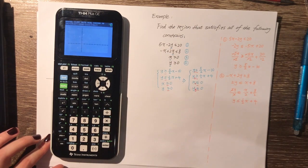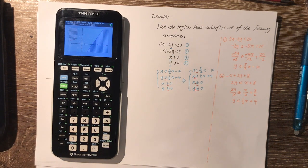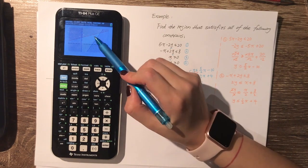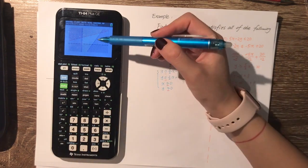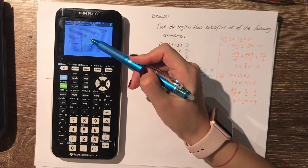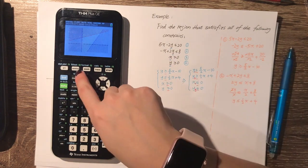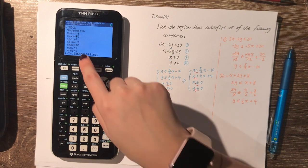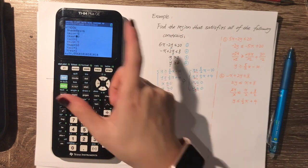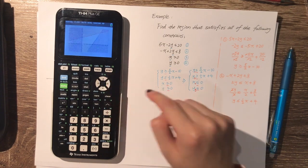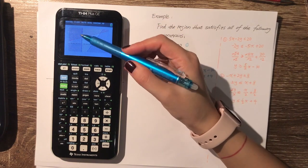Now click GRAPH. It may take a moment to load, but the graph should appear. If you can't see the intersections or the required region is too small, click WINDOW and reset your x minimum, x maximum, y minimum, and y maximum to a reasonable range.